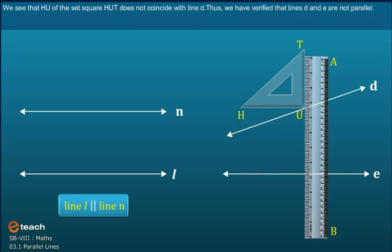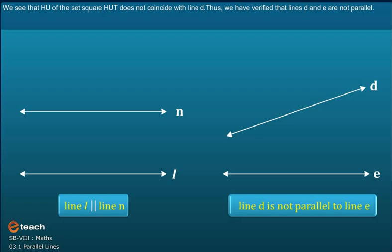We see that the side HU of the set square HUD does not coincide with line D. Thus, we have verified that lines D and E are not parallel.